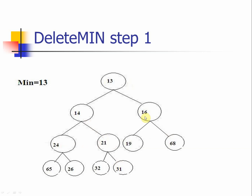Think about this: if the value 16 were also 13, after we remove the root 13, since it's the smaller one it comes up, and then 19 is the smaller one and it comes up. You may think we've completed the delete operation, however if this node is empty then this is not a binary heap at all, because it's not satisfying the complete binary tree criteria. Therefore we cannot do it that way.